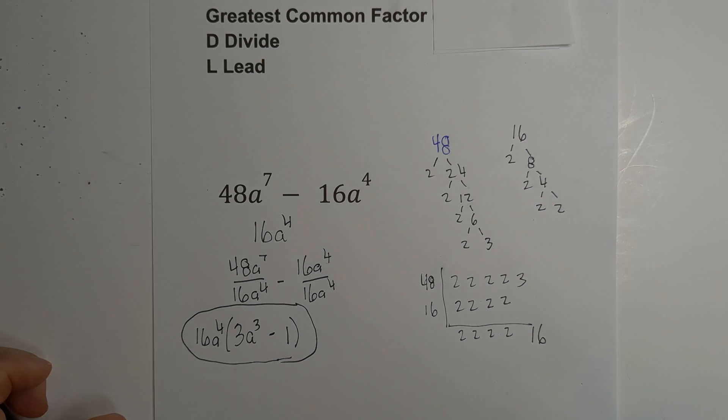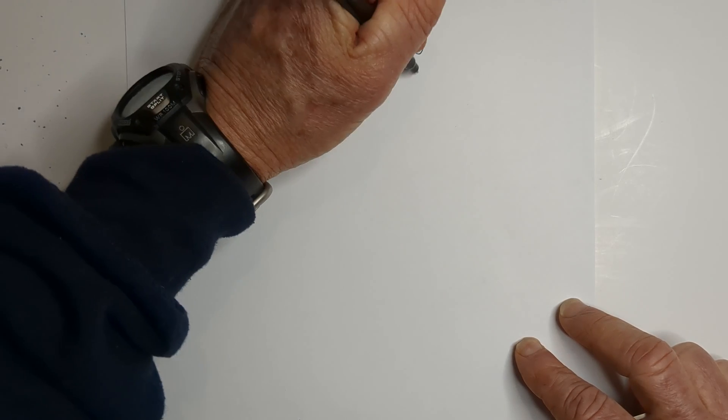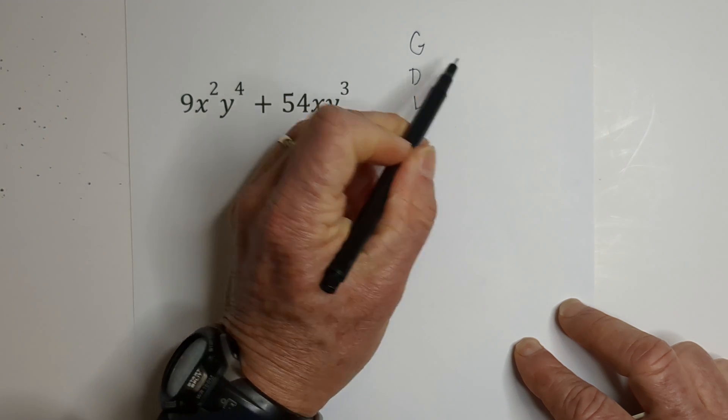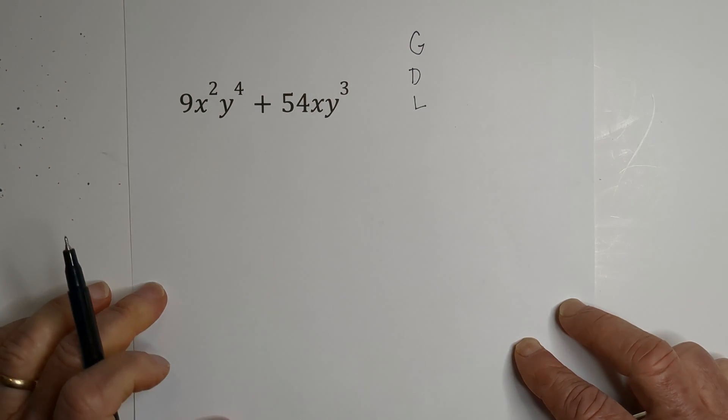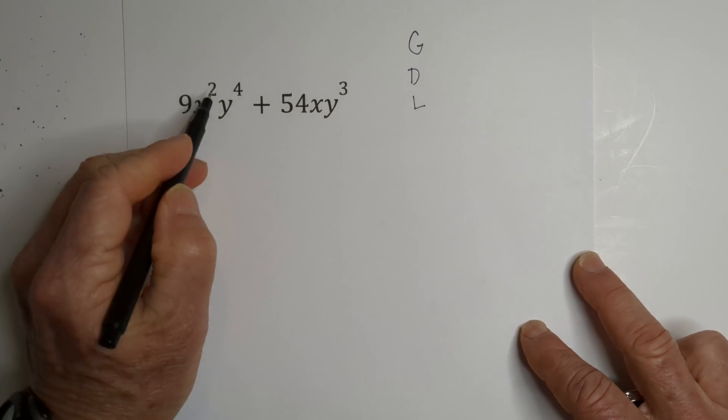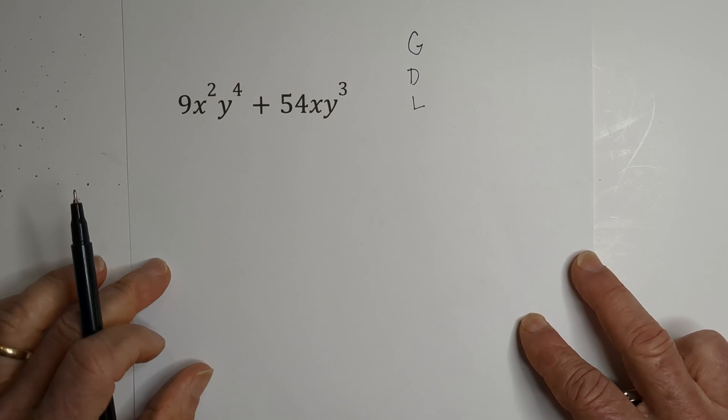Let's work another example. Remember we're going to use GDL: greatest common factor, divide, lead with the greatest common factor. We need to find the greatest common factor of these two monomials.